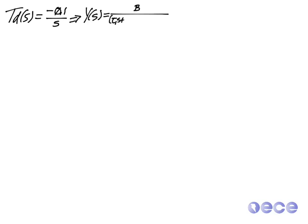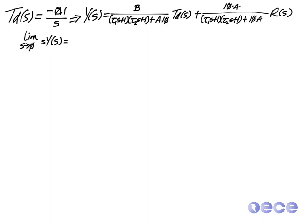Okay, so now if we choose TD of s to be non-zero, that is we choose minus 0.1 over s, and remember that this is our equation for Y of s, so this is the transfer function that gives us Y of s based on TD as an input and R of s as an input.